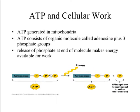Our cells break down the foods we eat to get energy, and cells use energy that is packaged into a molecule called ATP — adenosine triphosphate — generated in the mitochondria where cellular respiration occurs. ATP consists of an adenosine group and 3 phosphate groups. The release of phosphate groups from the end of the molecule makes energy available for work — each time a phosphate is released, it gives the cell energy it can use to do work.